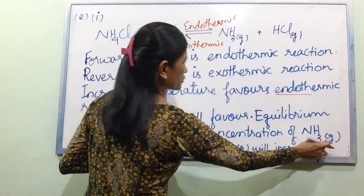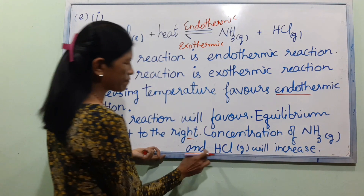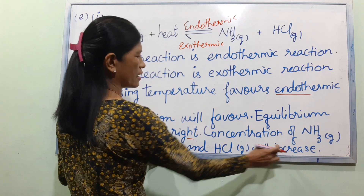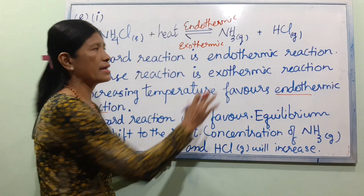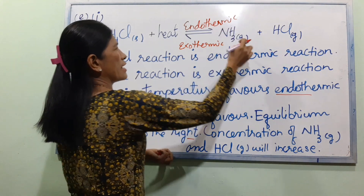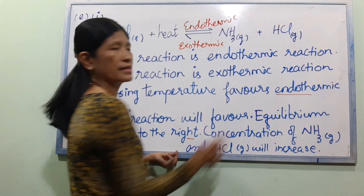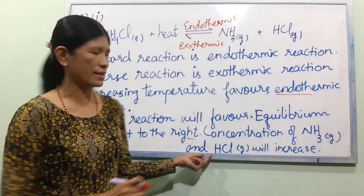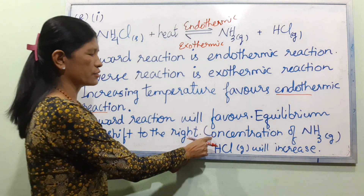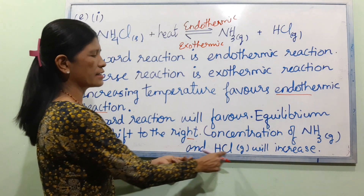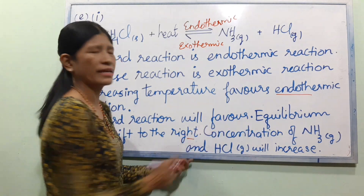The concentration of NH3 gas and HCl gas will increase. This drives the ammonia and hydrochloric acid gas equilibrium to the right. The concentration of NH3 gas and HCl gas will increase.